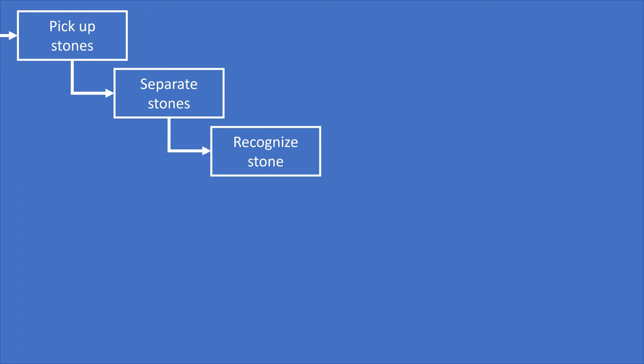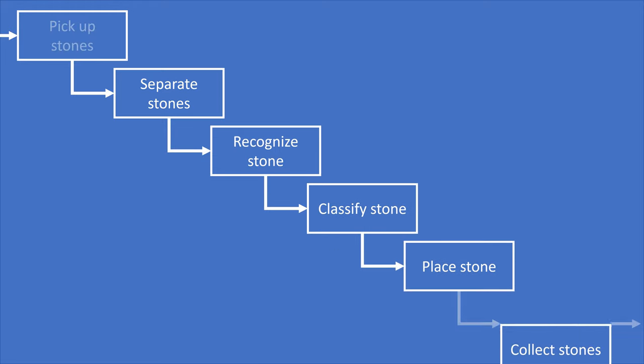The first step in product design is defining a functional structure. As with the first version of LEGOLAS, the functions are pick up stones, separate stones, recognize stone, classify stone, place stone, and collect stone.